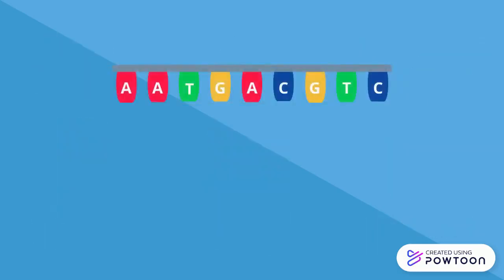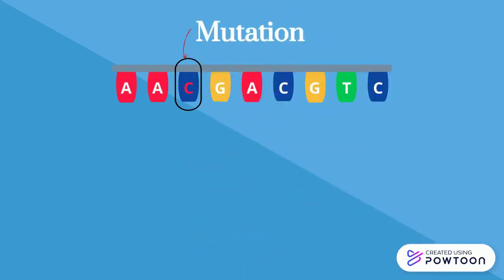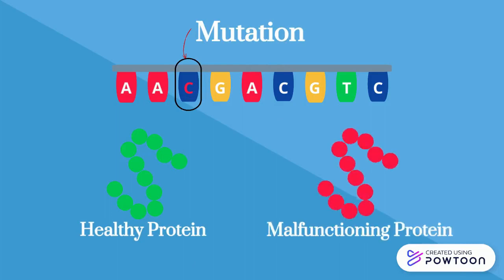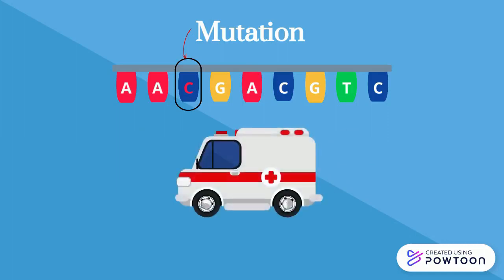When base pairs are added or removed in genes, it is called a mutation. This can mean that the protein that the gene is supposed to make might not work as it should, or the protein might not be made at all. Depending on the effects of the mutation, it could even be life-threatening.